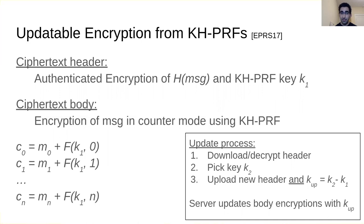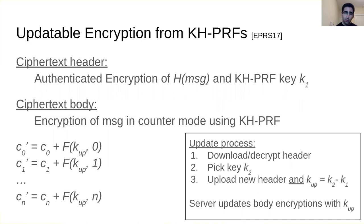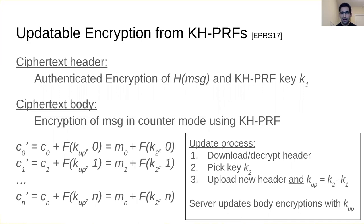The server updates each body block by adding F(K2 − K1, index). By the key-homomorphic PRF property, this equals F(K2, index) minus F(K1, index), so the K1 terms cancel, yielding message_block plus F(K2, index) — a correct encryption under key K2.